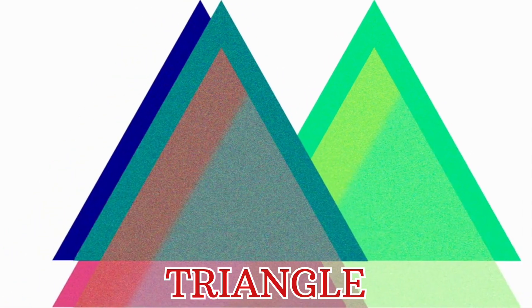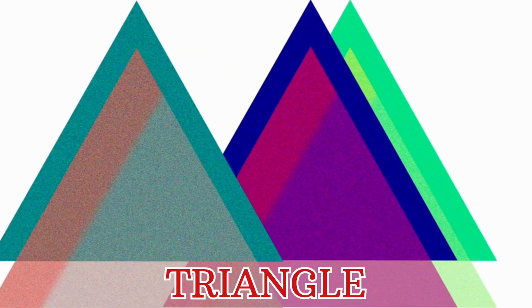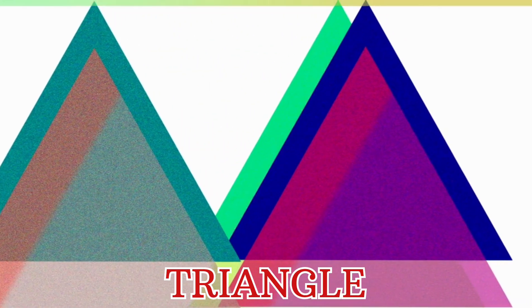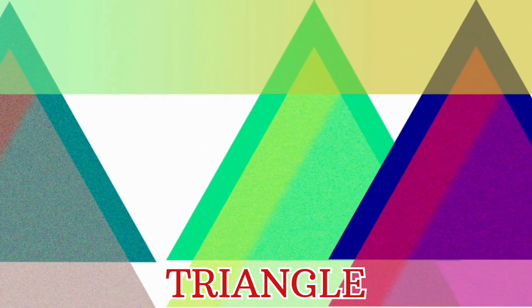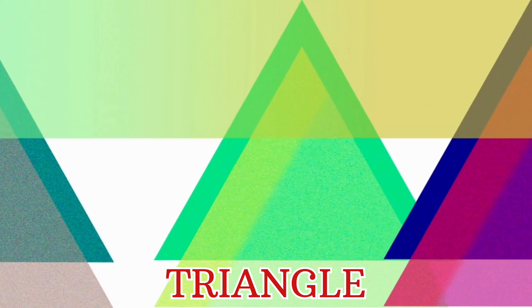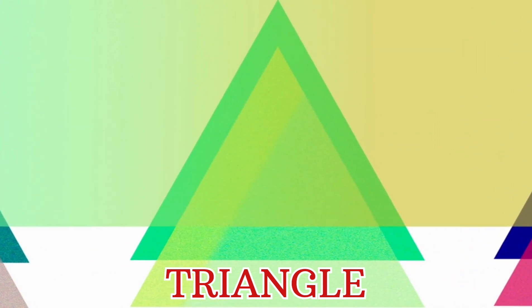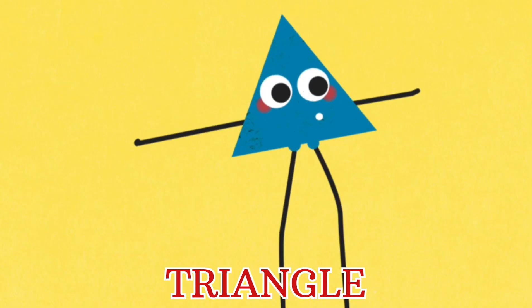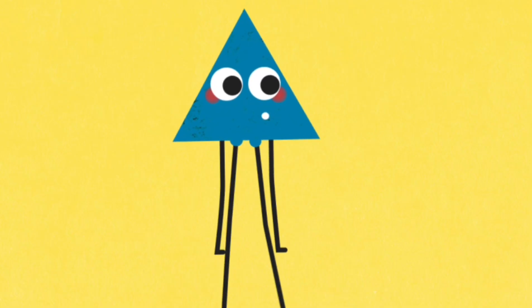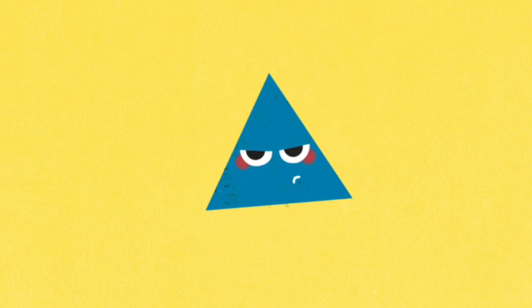Triangle, rectangle, circle, oval, square. I'm a triangle with three sides, three straight sides. I'm a triangle with three sides, three straight sides. Three straight sides, I'm a triangle with three sides and a pointy head.